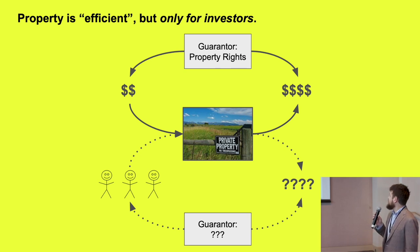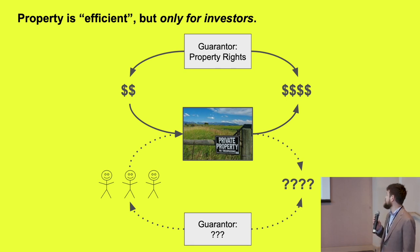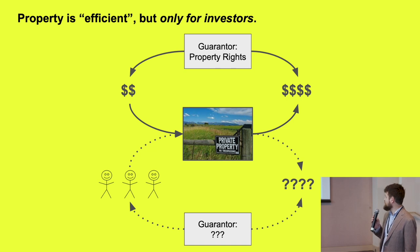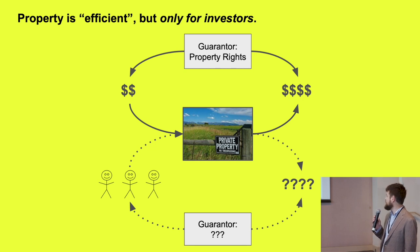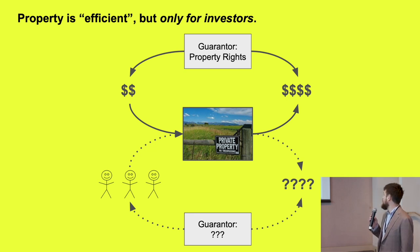Property is efficient in a sense, but it is efficient really only for investors. If you think of money going into property and money coming out, property rights are a very powerful guarantor of closing that loop — making sure the money out rewards the money that went in. But it quite exquisitely ignores everything else: the networks of human beings and culture that go into property on the front end, and famously the externalities, the consequences of property arrangements on the back end.